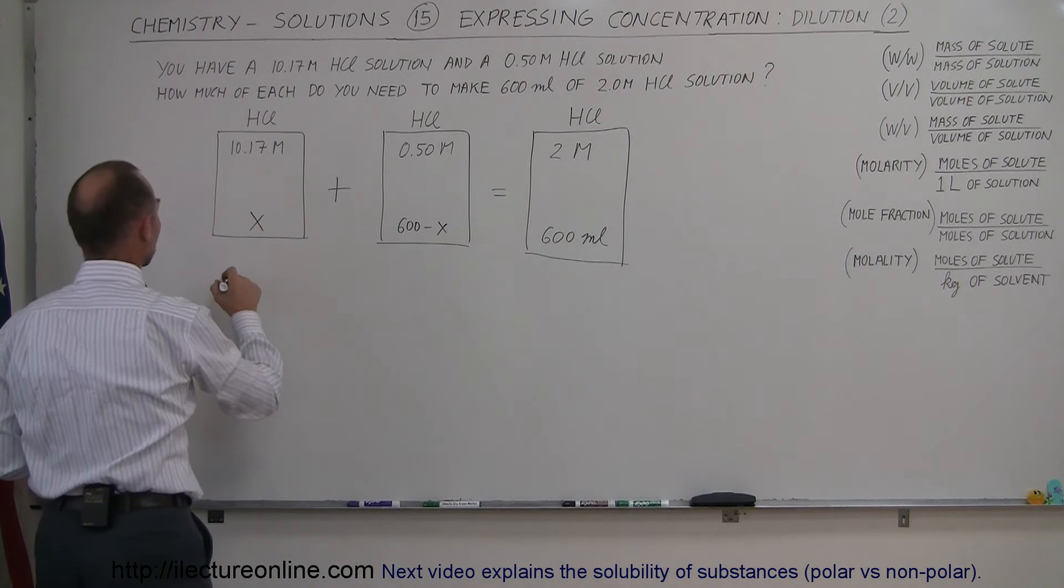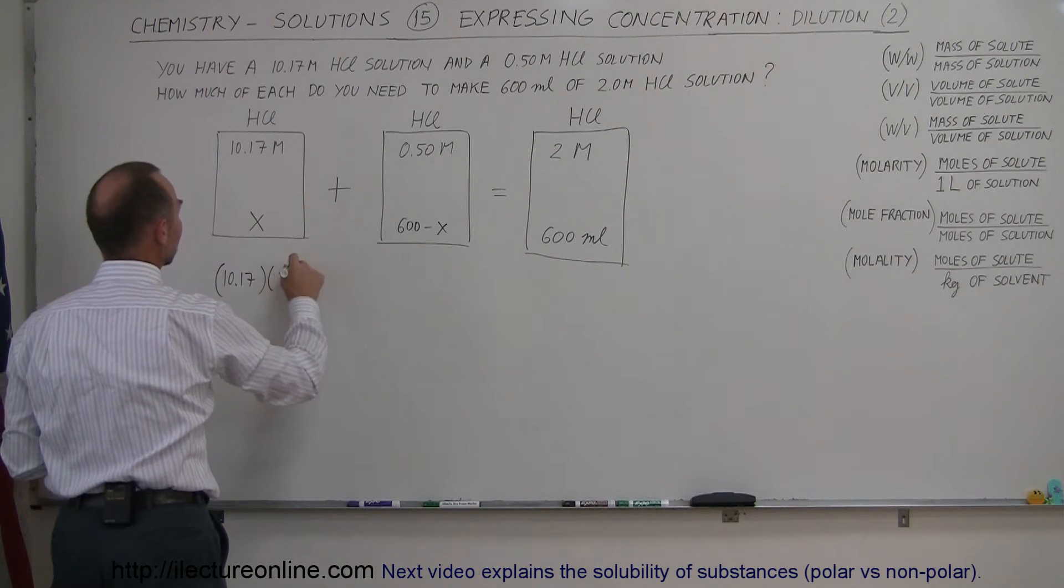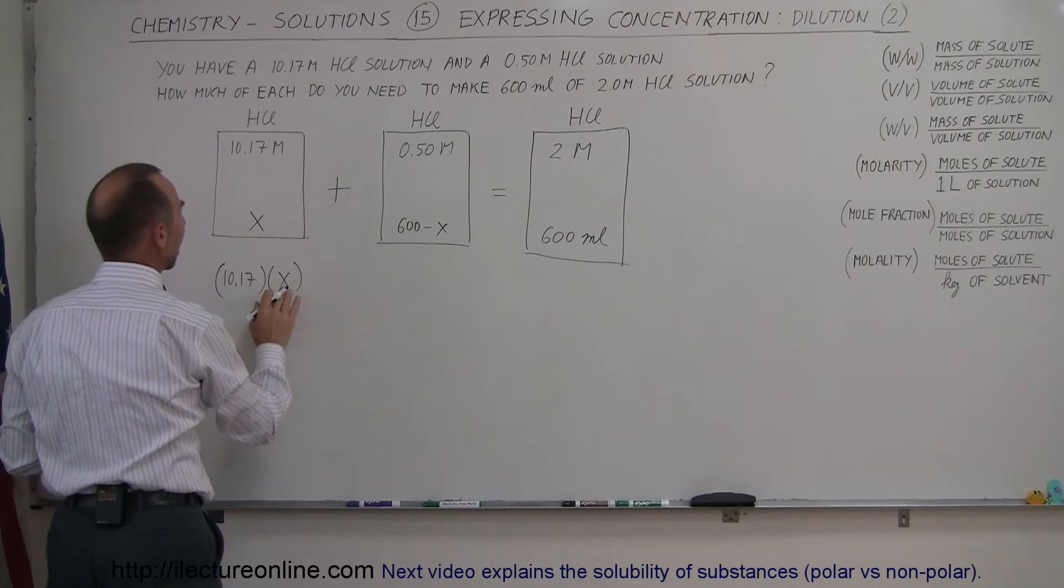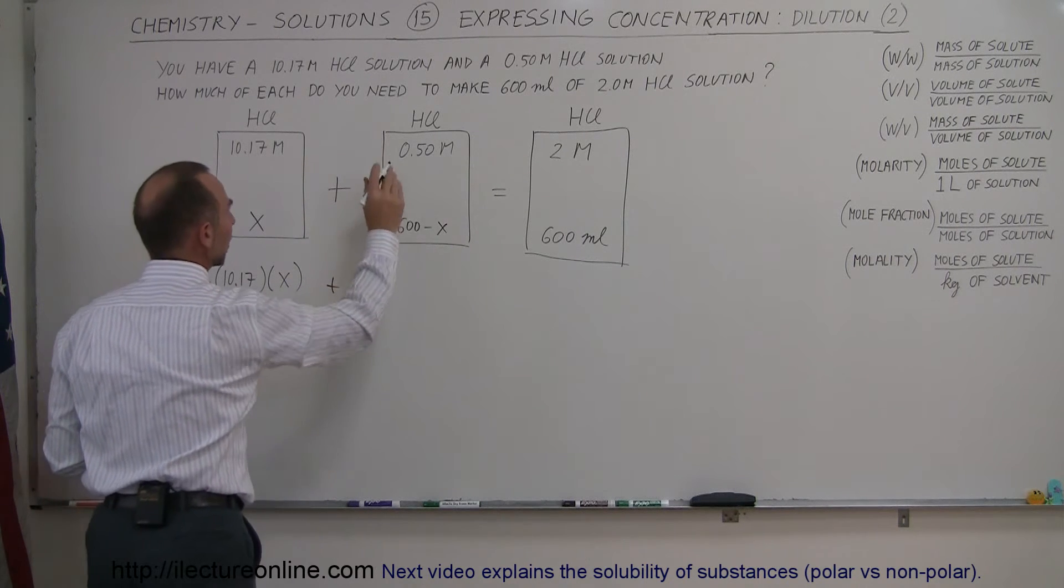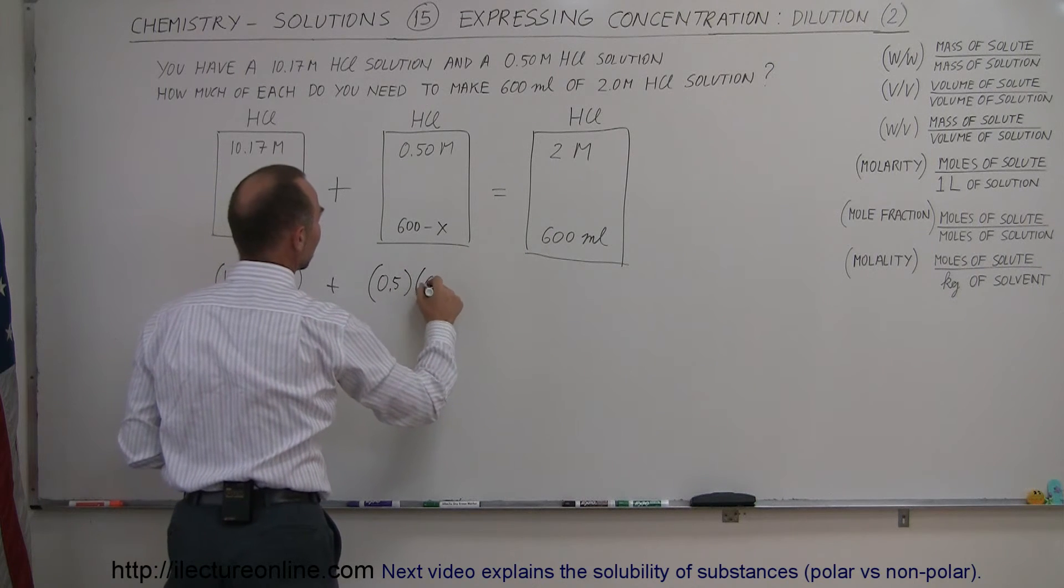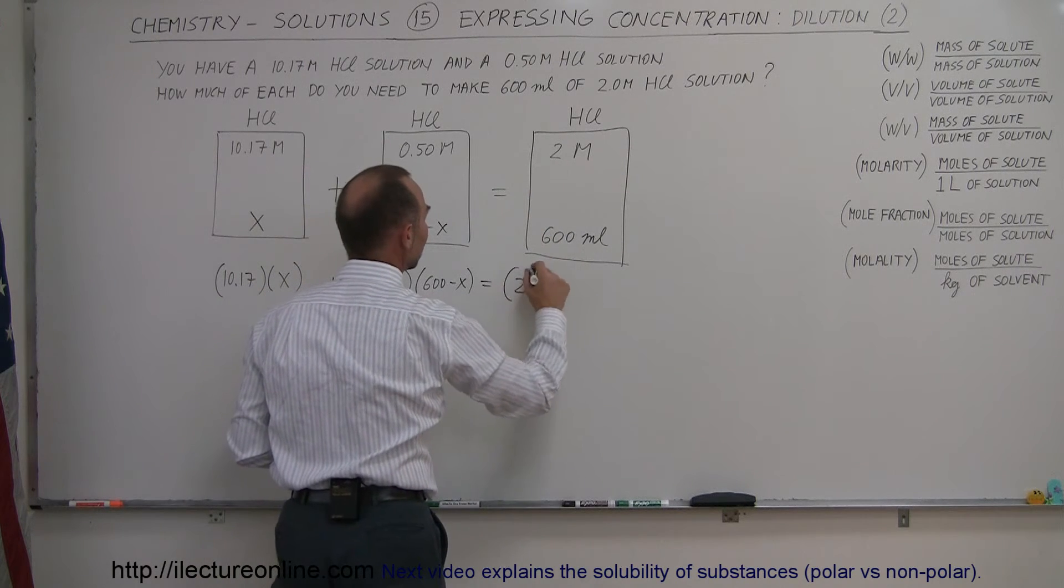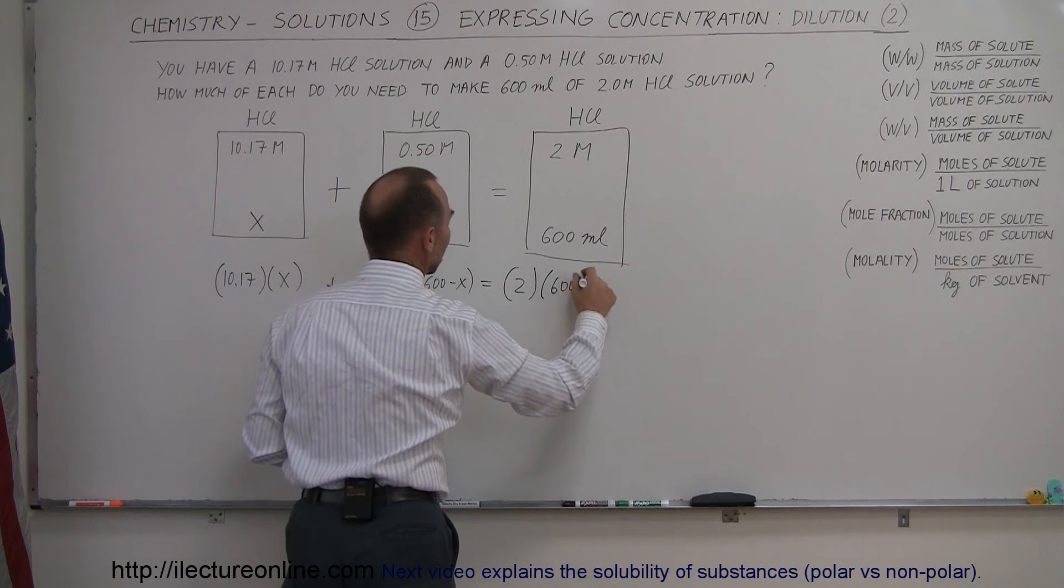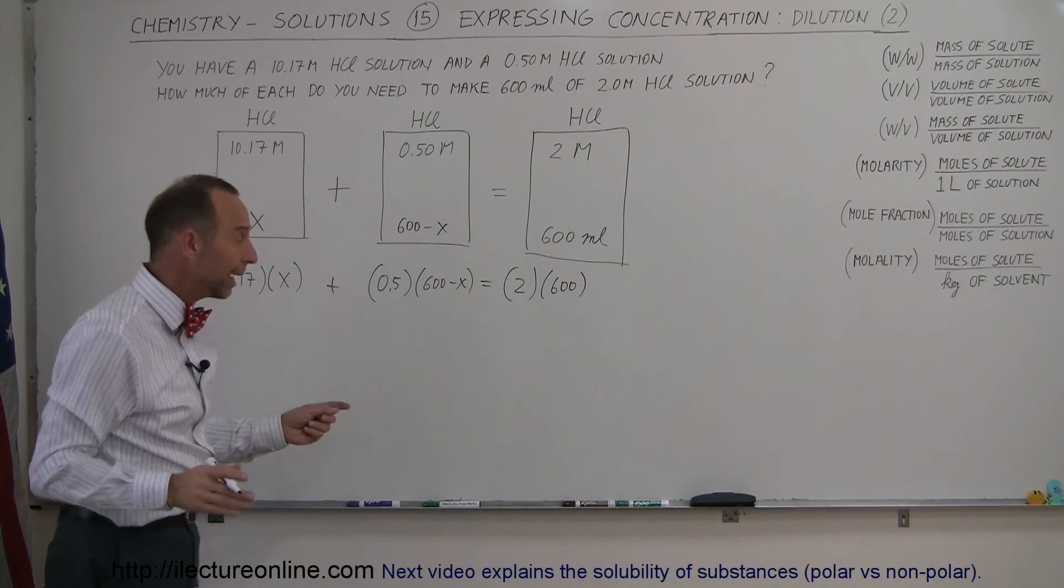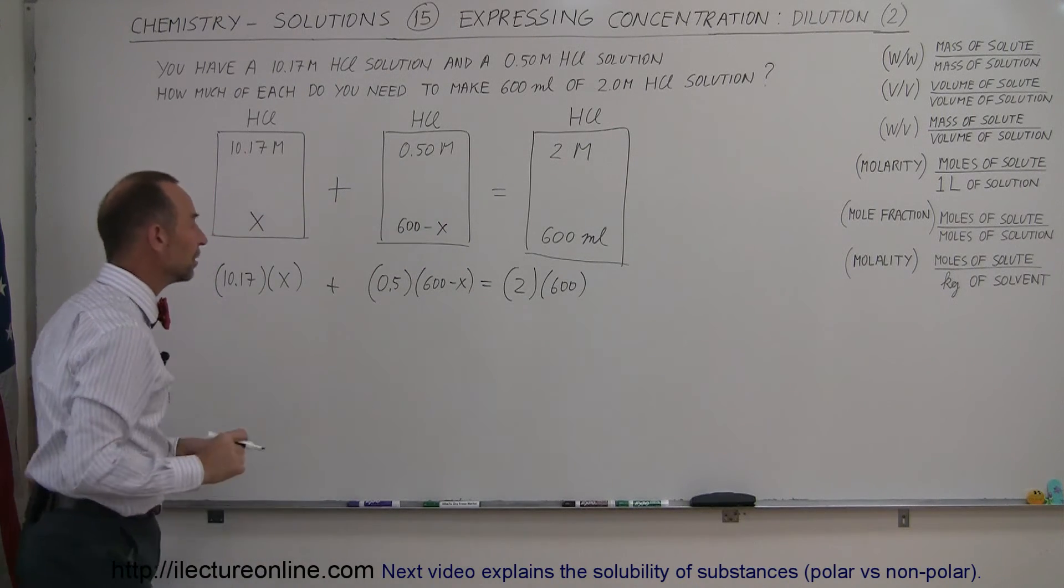And so in this case we're going to take 10.17 and multiply it times x. So the concentration times the amount plus the concentration, 0.5 times the amount, which is 600 minus x, and you set that equal to the concentration times the amount, 2 times 600. And that allows us now to solve for the unknown x and we can then find out how much of this and how much of this solution we're going to need.